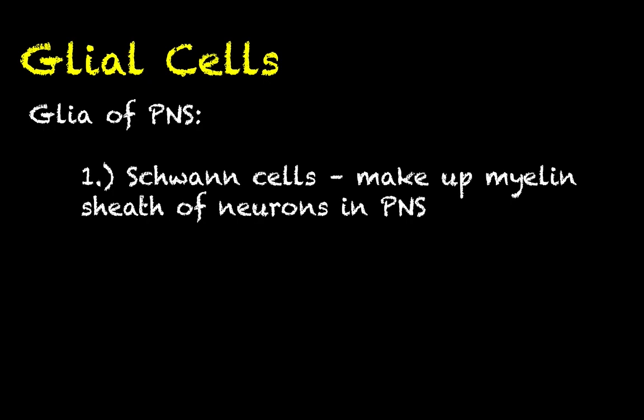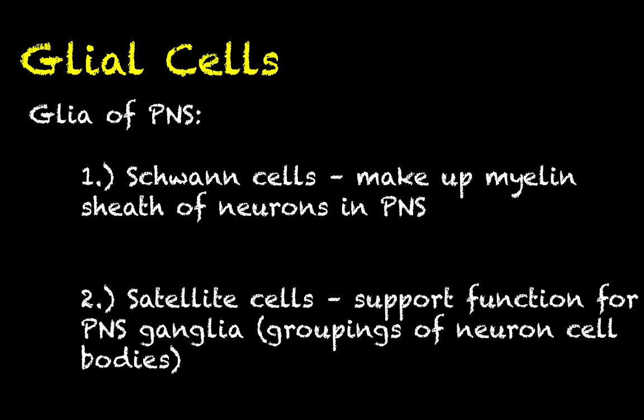There are two major types of glial cells in the peripheral nervous system. First are Schwann cells — they actually deposit and make up the myelin sheath of neurons in the peripheral nervous system. Each layer of myelin between nodes of Ranvier is actually a whole Schwann cell that wraps itself around the axon. Next, you have satellite cells, which provide support functions for peripheral nervous system ganglia — large clusters of neuron cell bodies found outside the central nervous system.